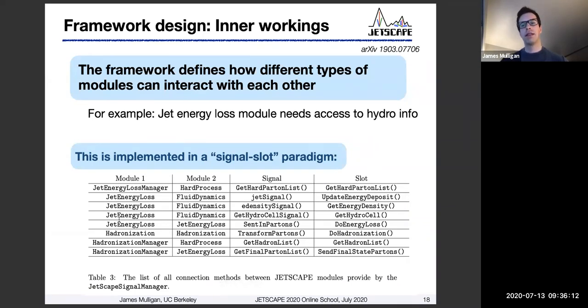So the framework itself, and this is a key point, is that the framework explicitly defines the different possible ways that different modules can interact with each other. This is where some physics choices come into the framework design, and we try to make this as general as possible, as few assumptions as possible. But for example, the jet energy loss module needs to have access to information from a hydrodynamic module. So the framework needs to know in some way how to actually connect or interface those two different modules together to allow information flow.